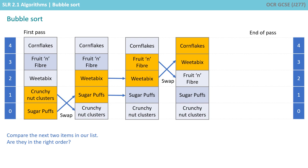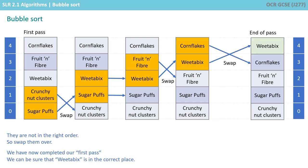And finally, we compare the last two items in our list: Cornflakes and Weetabix. Are they in the right order? No, they're not, so we swap them over. We've completed what we call our first pass. What we can be sure of is that Weetabix is now in the correct place — in effect, it's bubbled up to the top of the list. We now have to perform a second pass.